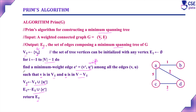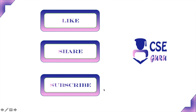This procedure continues until all vertices are connected with the smallest possible weights. Once the algorithm completes, it returns the edge set with all vertices connected and the total weight at its minimum — this is the minimum spanning tree constructed using Prim's algorithm. Thank you for watching this video.